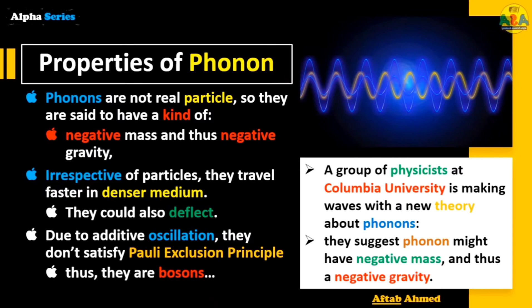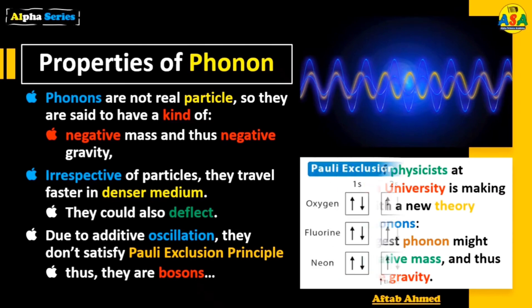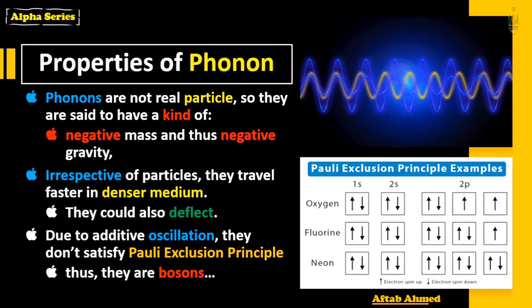So they are bosons. What are bosons? Bosons are particles or particle-like things which satisfy Bose statistics. These are some other examples of Pauli exclusion principles for oxygen, fluorine, and neon where 1s, 2s, and 2p shells are explained.